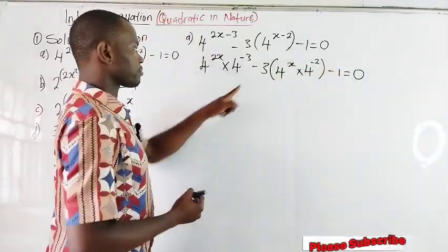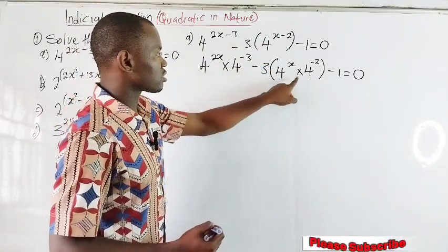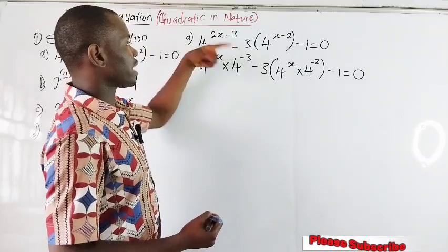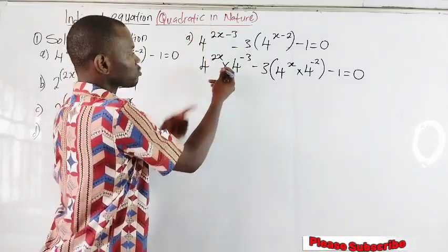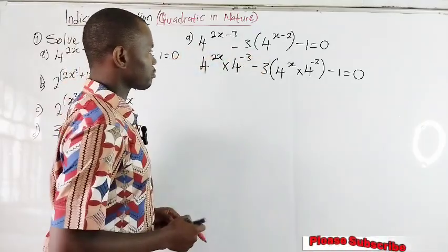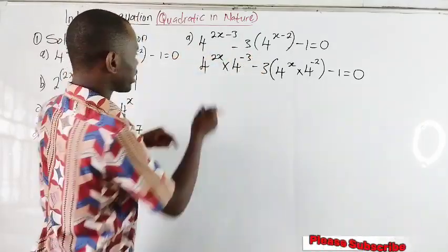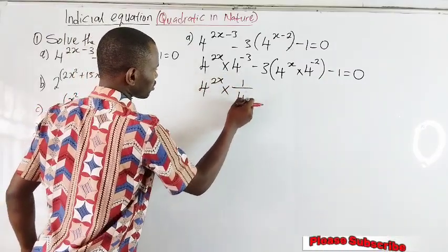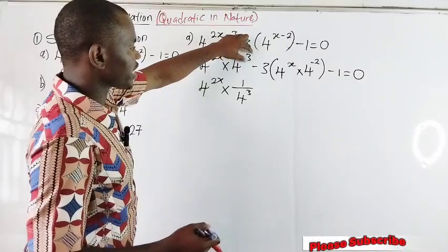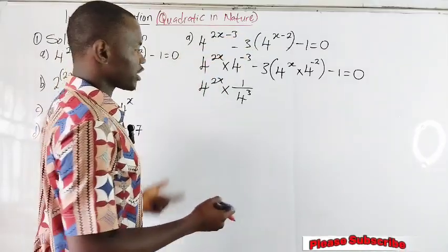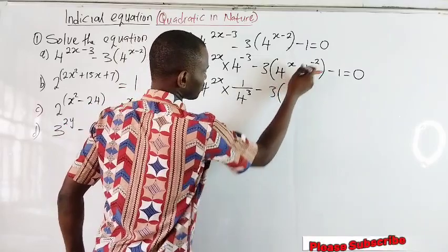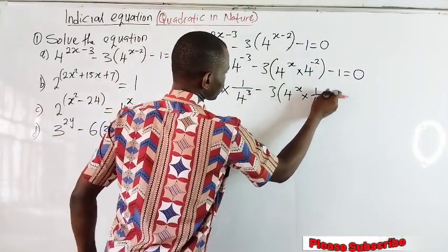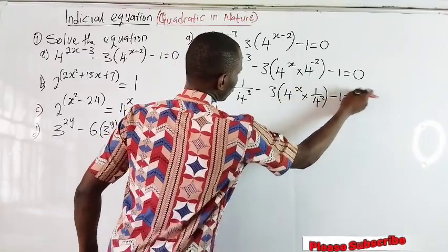I've succeeded in expanding the powers to different bases using multiplication. Whenever you have two powers adding or subtracting, we can use multiplication or division to expand the powers. So from here, we'll have 4 raised to the power of 2x times 1 over 4 raised to the power of 3. The reason is because the exponent is negative, so we introduce an inverse. Same here: 4 raised to the power of x times 1 over 4 raised to the power of 2, minus 1, equal to 0.